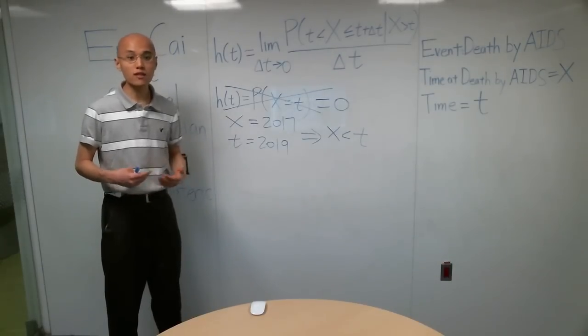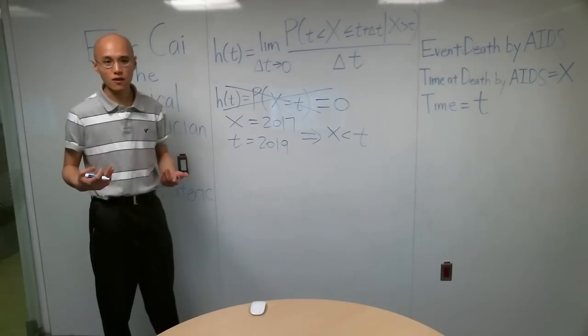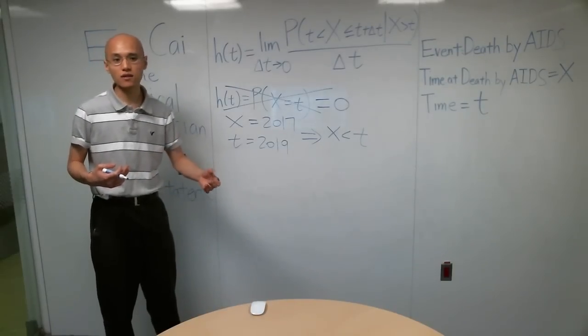Now, you may be wondering why we're dividing by delta T. Well, let's consider two arbitrary time intervals: delta T being 10 and delta T being 20.